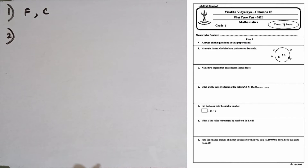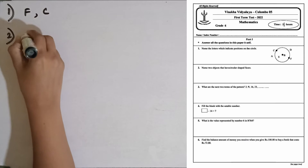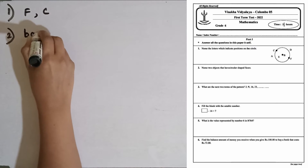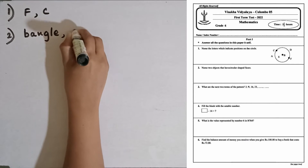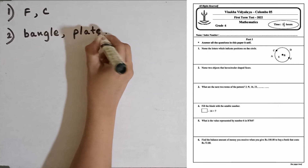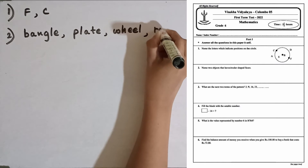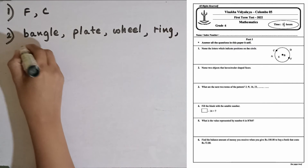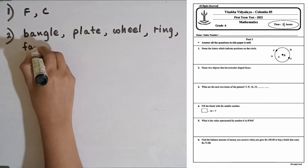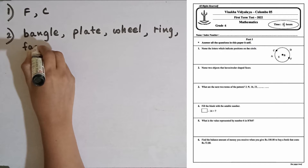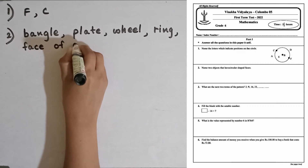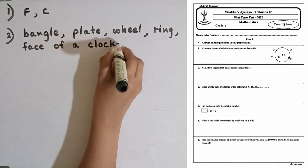Question number two: name two objects that have circular shaped faces. There are lots of examples. A bangle is circular, then a plate, a ring, and the face of a clock. You can write two of these examples. There are lots of other examples also.